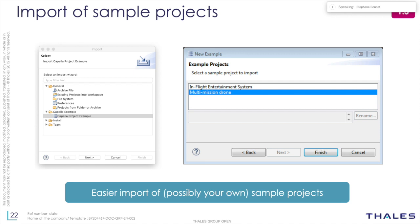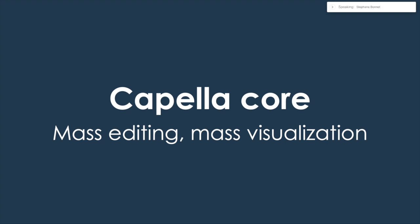We've introduced something good for Capella beginners. Often the first step is loading a sample project to explore what Capella is about, and until now the import process was cumbersome. We now have the ability to directly select a Capella sample project to import. By default you get the In-Flight Entertainment System, but you can define your own sample projects by placing them in a specific folder in your Capella installation. This is useful for providing users with domain-specific sample projects.